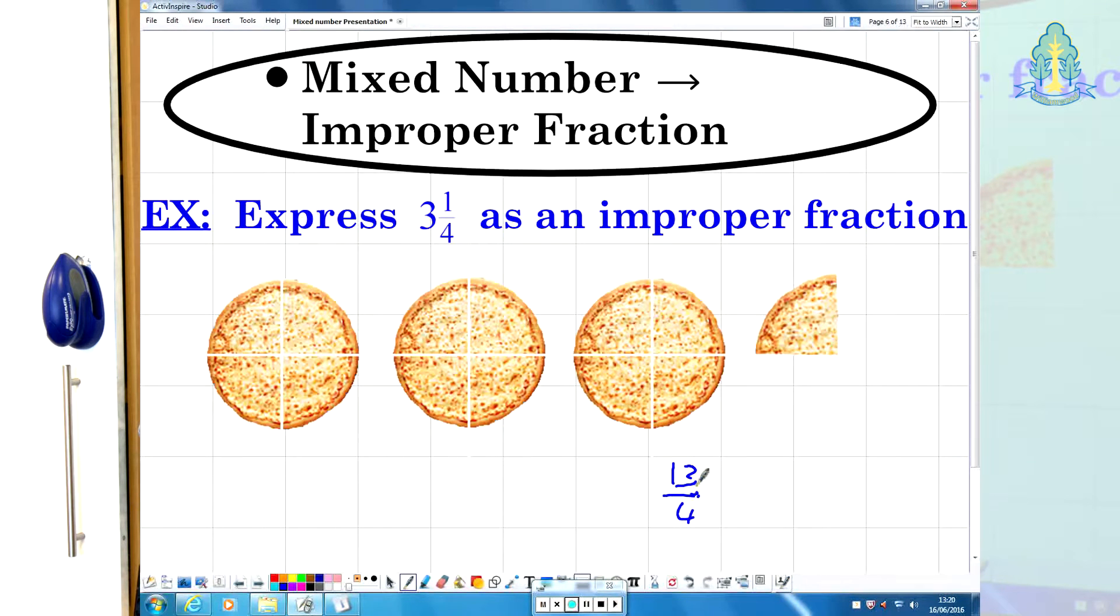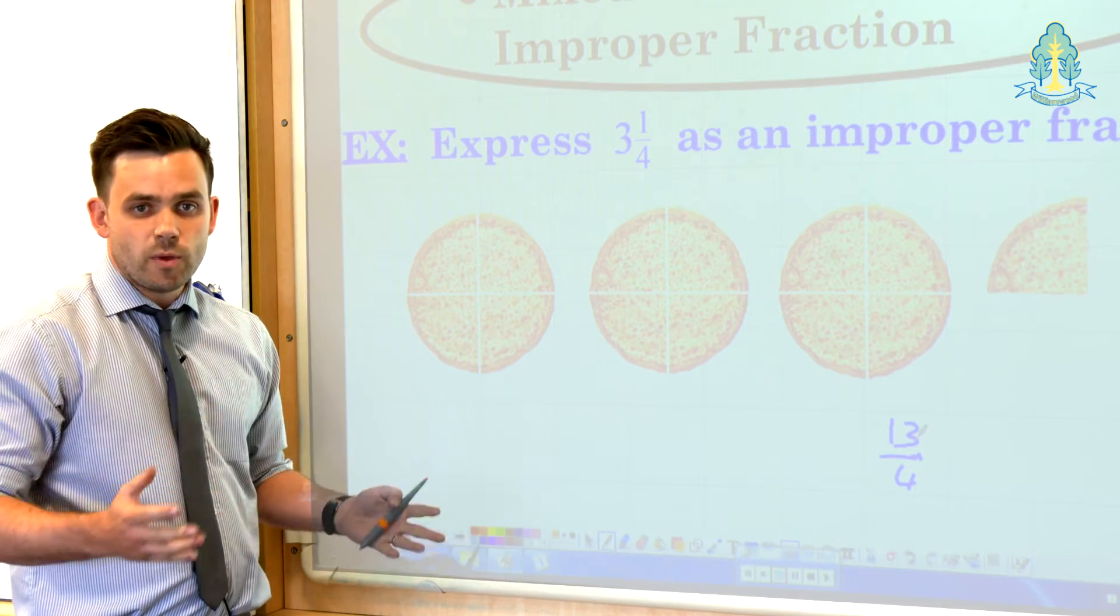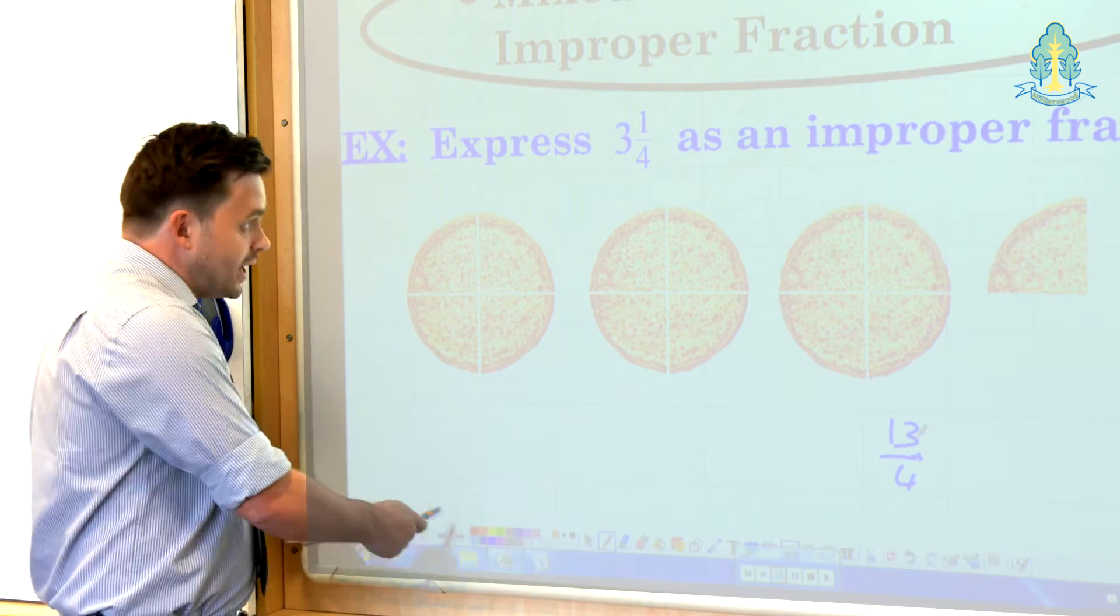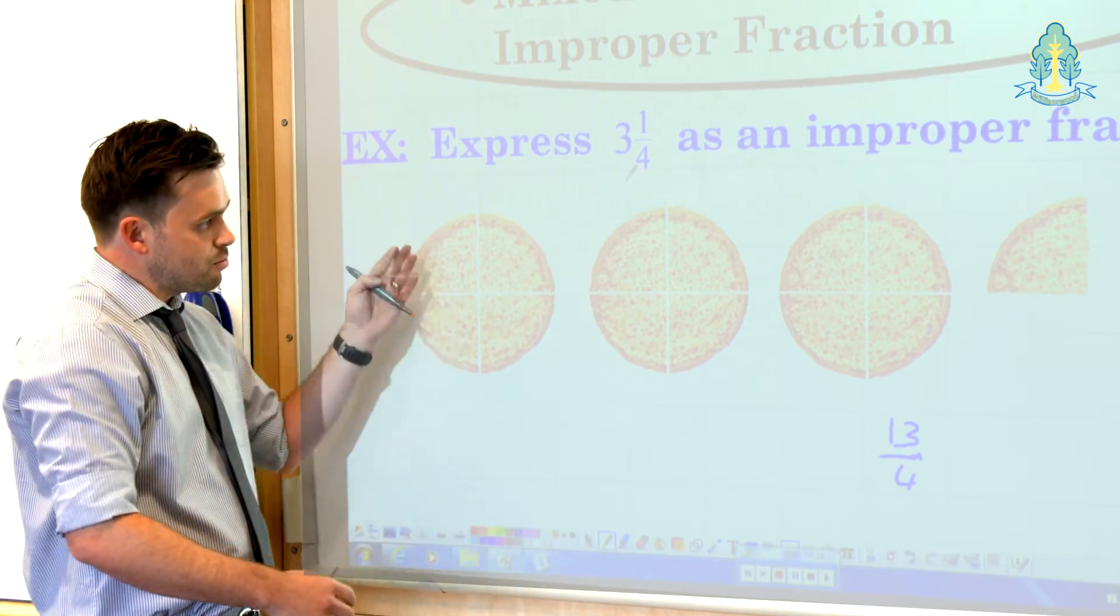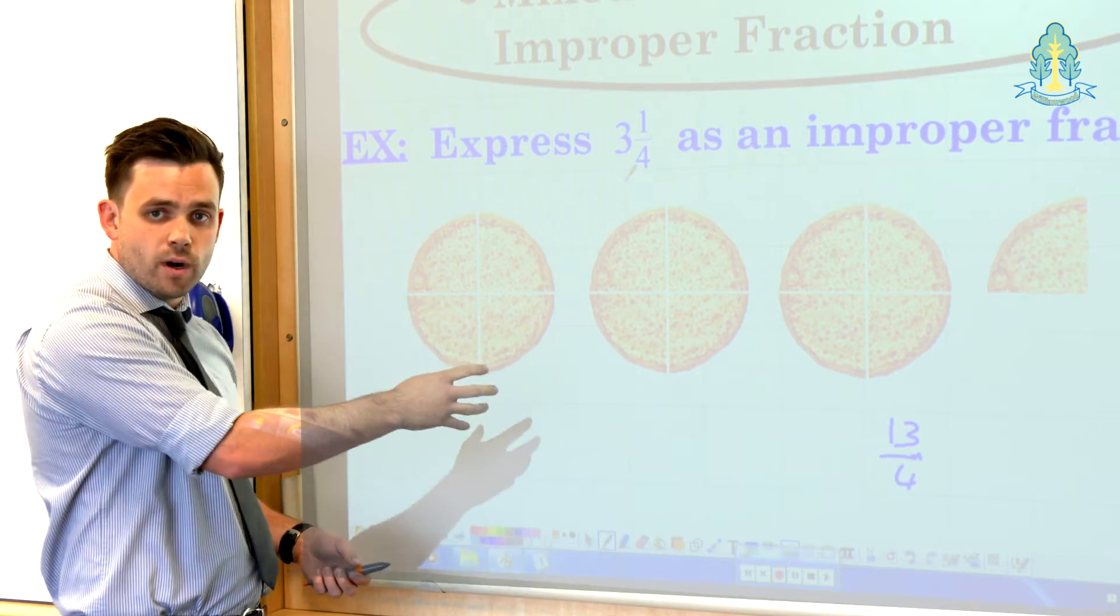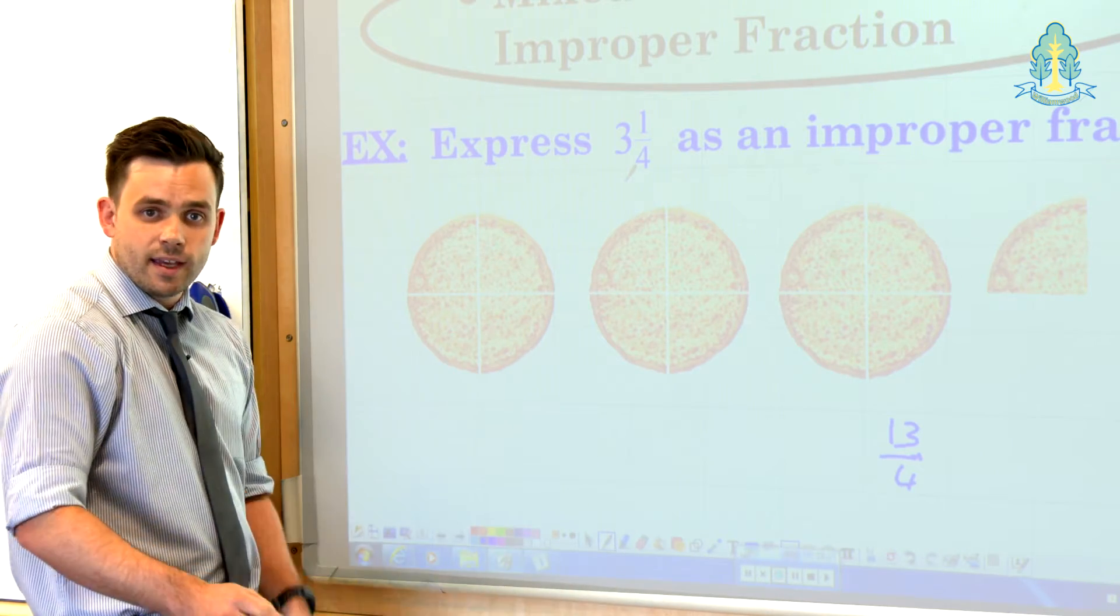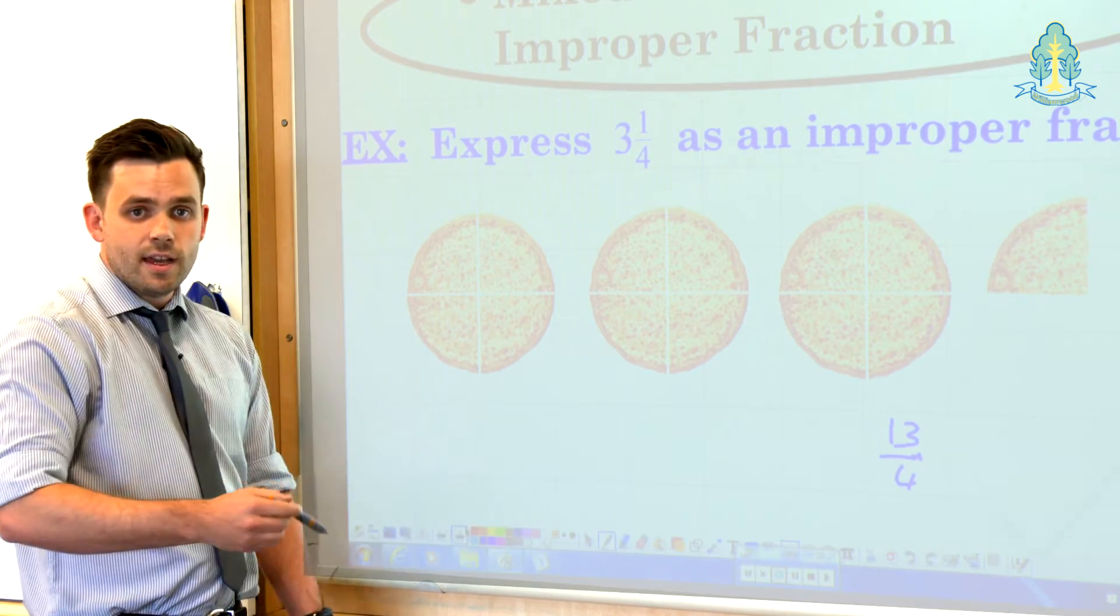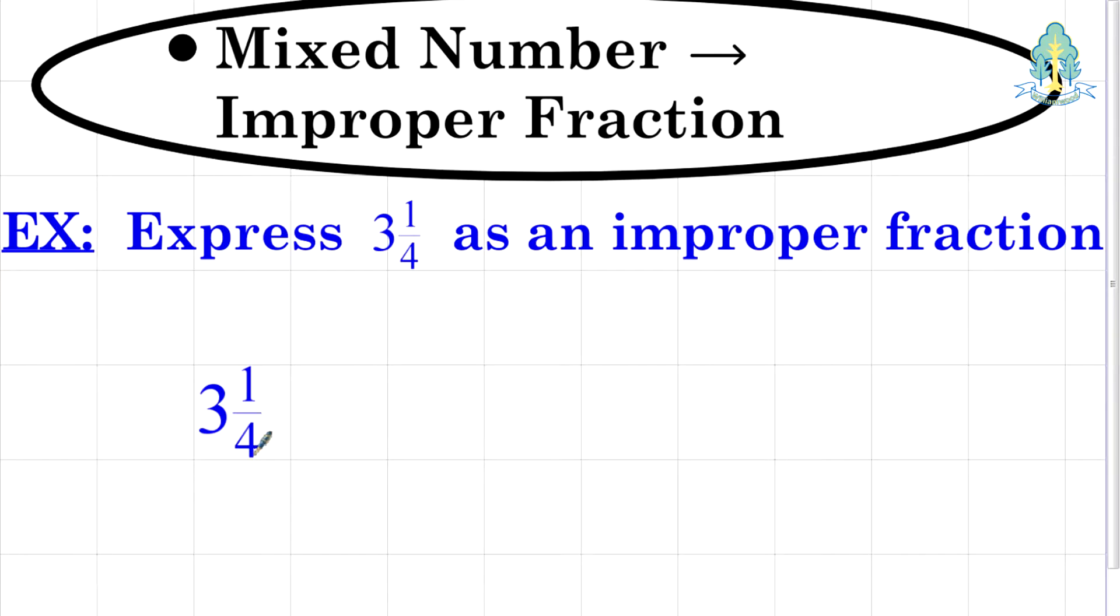Now 13 quarters split this way is easy enough to see but we would want the pupils to do this without any drawings at some stage. They have to make the link that the whole number part and the denominator are very important. We have 3 whole pizzas split into quarters so we have 3 lots of 4. We have our 4, our 4, our 4 to create the 12 with the one extra that gives us the 13.